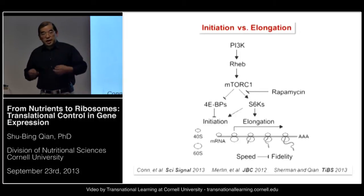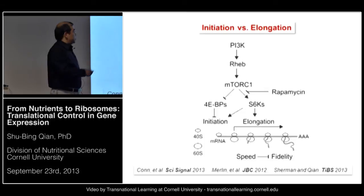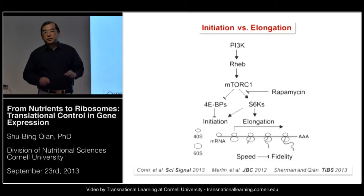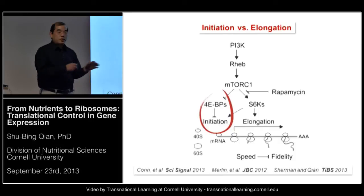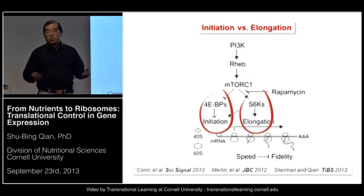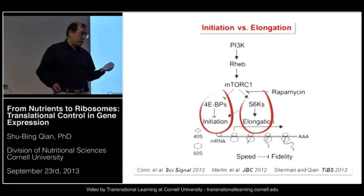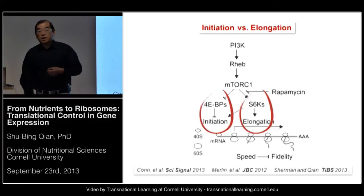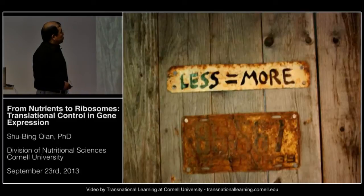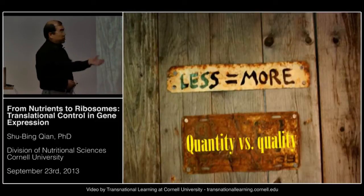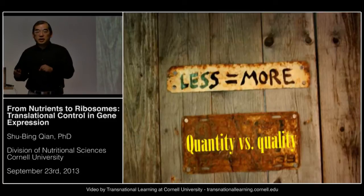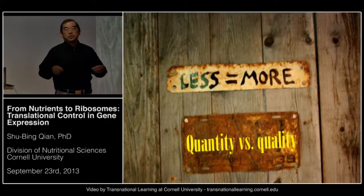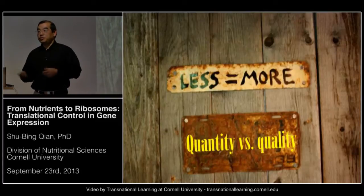The nutrient signaling actually affects translation at multiple stages. When it occurs at the initiation stage, it affects the biosynthesis of chaperone molecules. When it occurs at the elongation stage, it affects the quality of translational products. This probably provides an explanation of why hyperactive nutrient signaling can be detrimental. The take-home message is 'less is more' — especially when we consider the correlation between quality and quantity. Slowing down translation improves protein homeostasis.